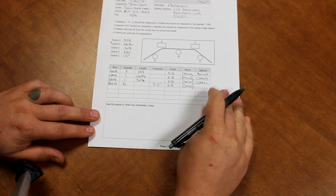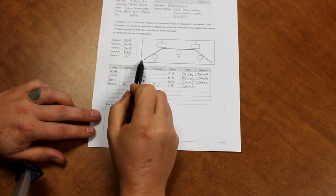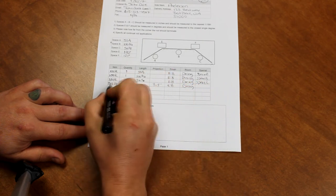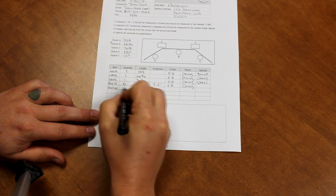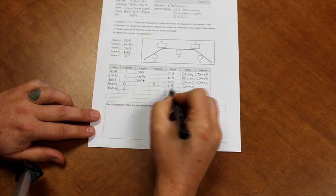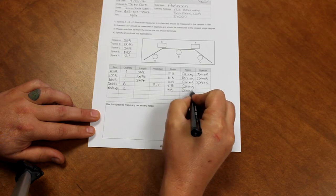Next we will be determining our finials. For this rod we have 2 finials. Item number will be end cap. Quantity will be 2. No length is needed. Projection is unneeded. Finish English brown. Dining room. There will be no special instructions for this as well.